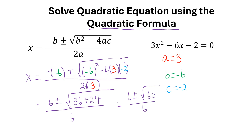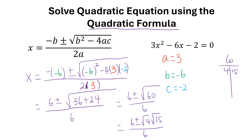I can simplify square root of 60 by reducing it using a perfect square factor. For 60, I know that 4 can go into 60 fifteen times, and 4 is a perfect square. So I can rewrite this as 6 plus or minus square root of 4 times square root of 15, over 6. And the square root of 4 is 2.